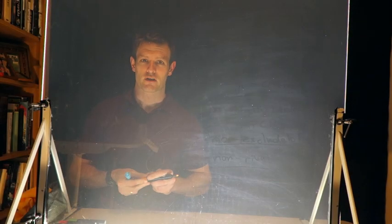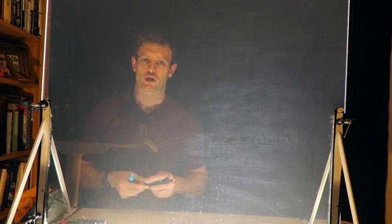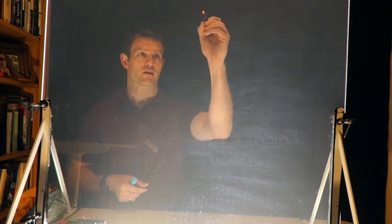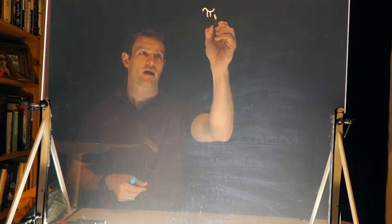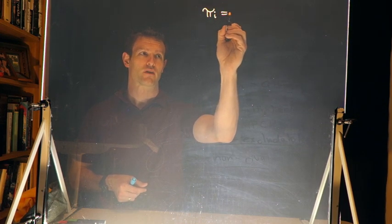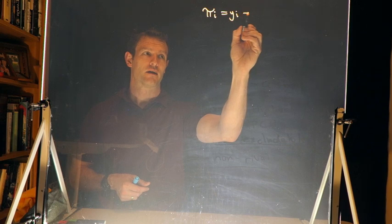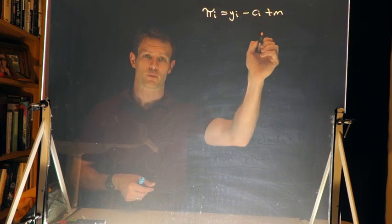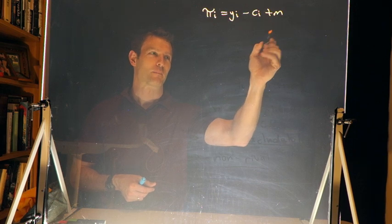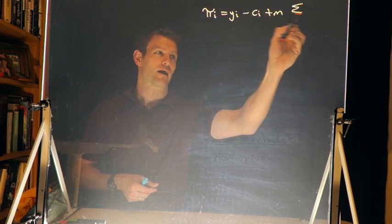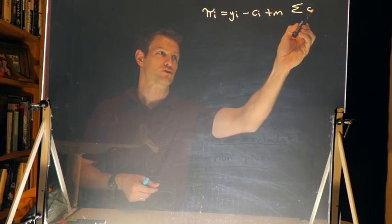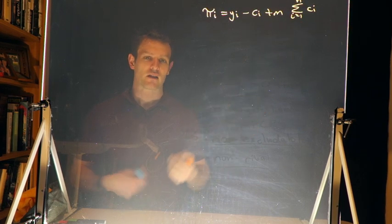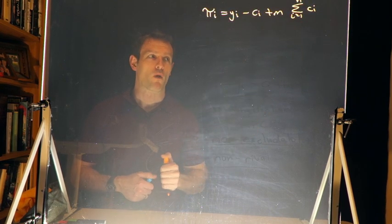Let's remind ourselves of the payoff function for a player in the voluntary contribution mechanism, which is the version of the public goods game. The payoff to player i, π_i, is equal to their endowment y_i minus what they contribute c_i, plus m — the marginal per capita return — multiplied by the contributions of all players from i equals one to n.